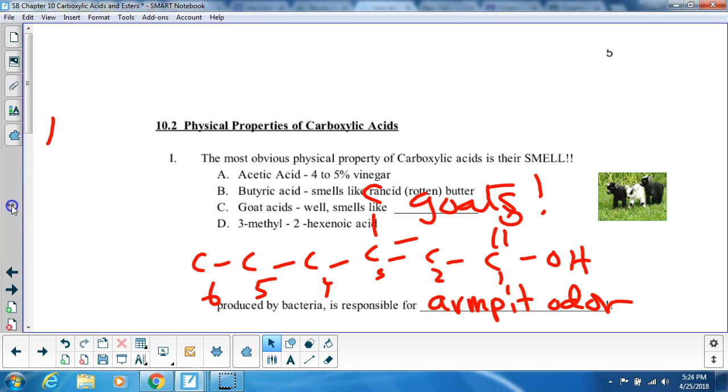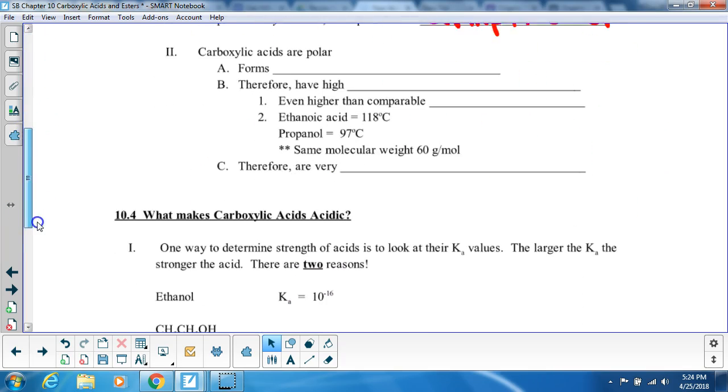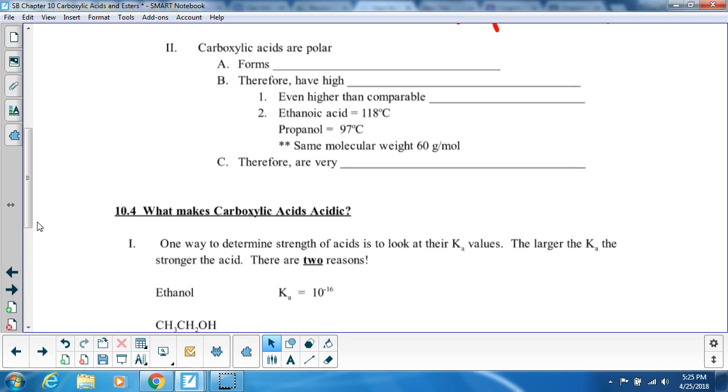Alright, so then what? Last property that I promise you I'm done is the carboxylic acids are very polar, and why is that? We have a C double bond O, OH, and that could be any other carbons. What do they form? Well, let's take a look at here.